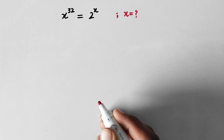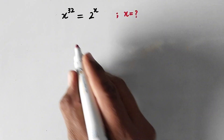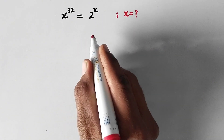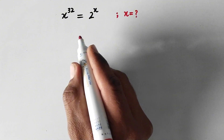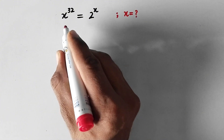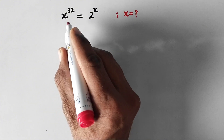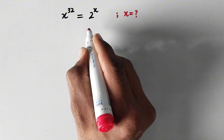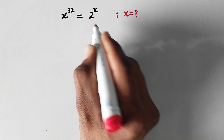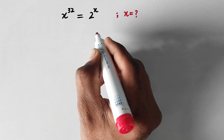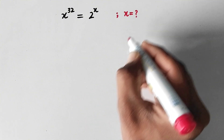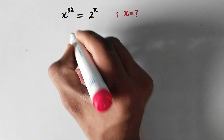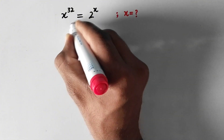Hello everyone and welcome to Explode Maths. In this video we are going to solve a very nice Olympiad math problem: x to the power 32 is equal to 2 to the power x, and we have to find the value of x. So let us see its solution.